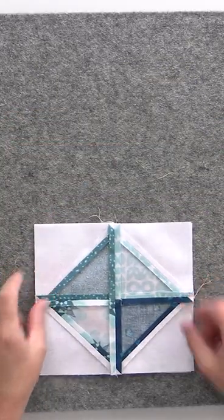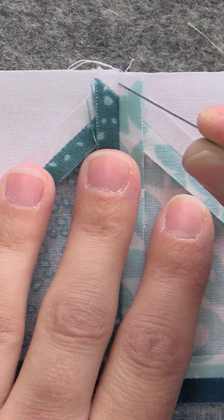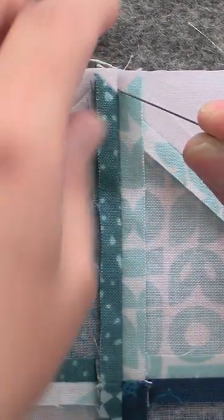So first we're going to flip everything right sides together. Now we want to be right in the middle of that seam, right at the tip of that V in the background fabric.